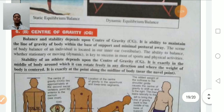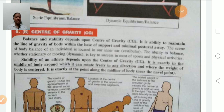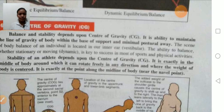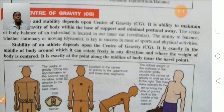Center of gravity is a point in which the body weight is equally balanced in all directions. Balance and stability depend on the center of gravity. It is the ability to maintain the line of gravity of the body between the base of support. The stability of an athlete depends upon the center of gravity — it is exactly in the middle of the body, around which it can rotate freely in any direction.